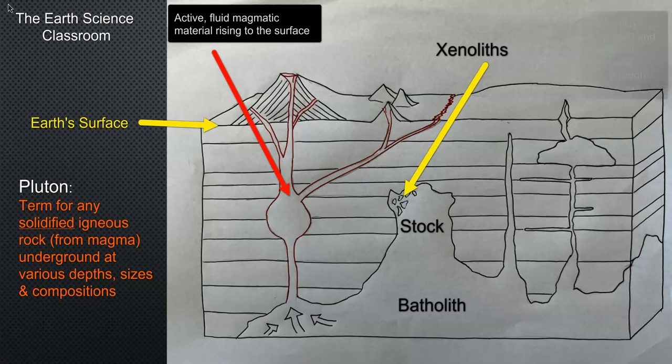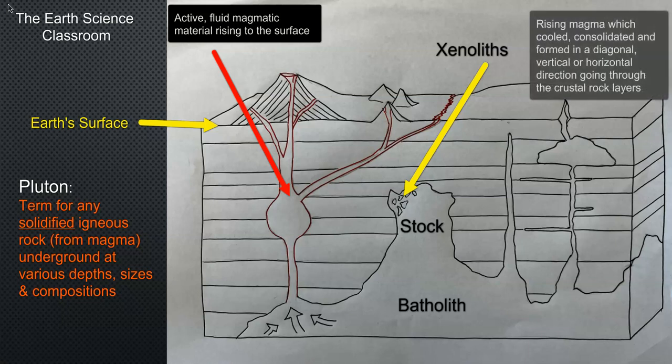Then we get the smaller types of plutons, the ones that kind of feed up. These are rising magma that come through the different layers towards the surface. The ones that are vertical are called dikes, the ones that are horizontal are called sills.